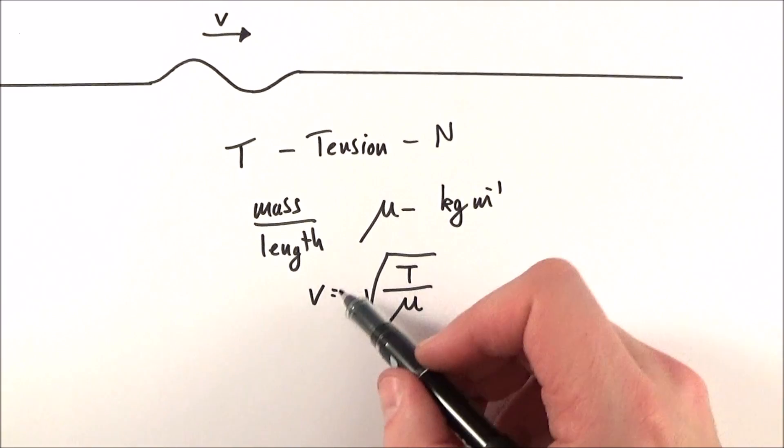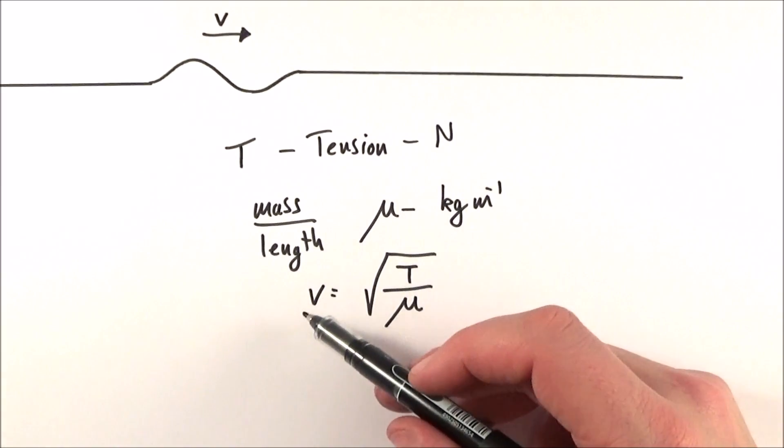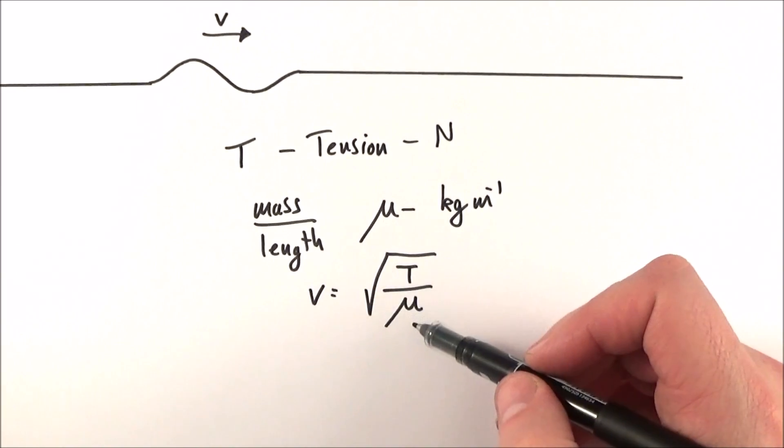So you can see that the greater the tension, the greater the velocity, and the greater the mass per unit length, the smaller the velocity is going to be because we have a one over that mass per unit length.